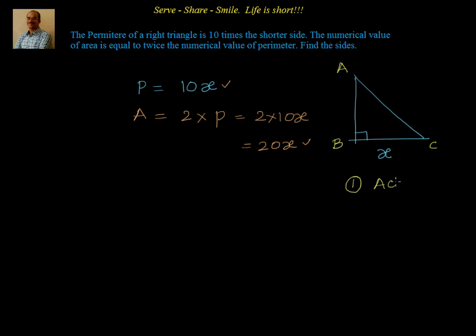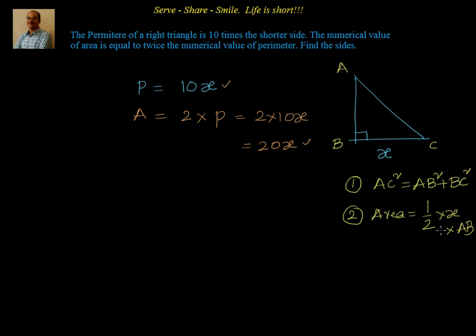The first condition is AC squared equals AB squared plus BC squared — hypotenuse squared equals the sum of squares of the remaining two sides. We also know that area equals half into base into height, which is half into x, that is BC, multiplied by AB. From the area condition I can find AB, then substitute back into perimeter equals 10x to get the third side, and finally apply Pythagoras theorem to find x.